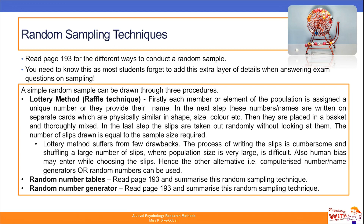The number one technique is putting names into a hat and pulling them out at random — similar to a raffle method. If you've ever participated in a raffle, every person in the population is given a number and then a random number generator generates a number; whoever holds that number becomes part of your sample if they agree to participate. Have a look at page 193 and add to your notes.